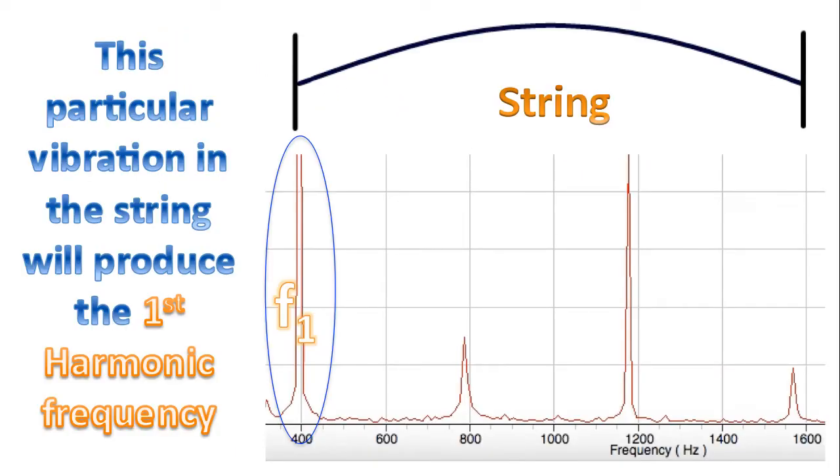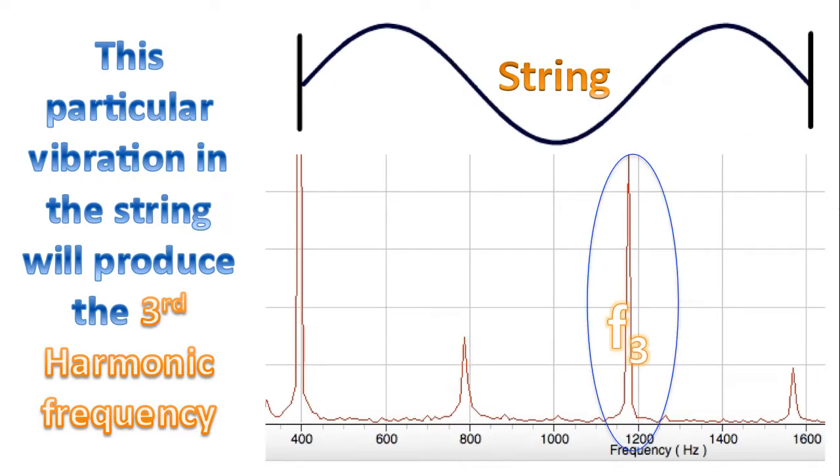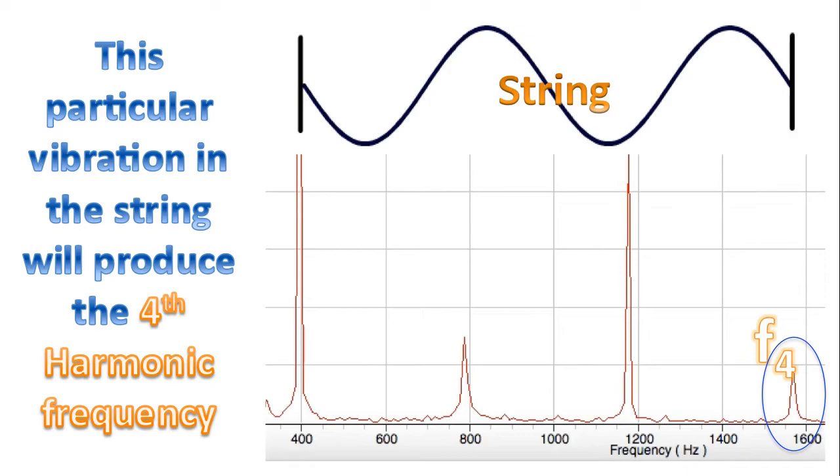And so this particular vibration in the string will produce the first harmonic frequency. This particular vibration in the string will produce the second harmonic frequency, which is at around 780 or 790 Hz. This vibration in the string will produce the third harmonic frequency, and this vibration in the string will produce the fourth harmonic frequency.